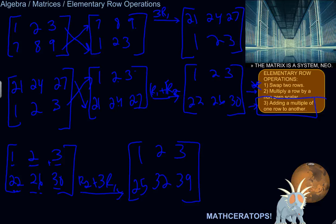So those are the three basic or elementary row operations. Swapping two rows. Multiplying a row by a scalar. Other than 0, you can't just multiply a row by 0. And adding a multiple of one row to another.